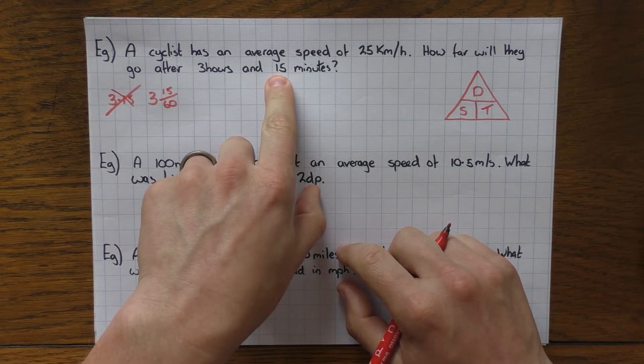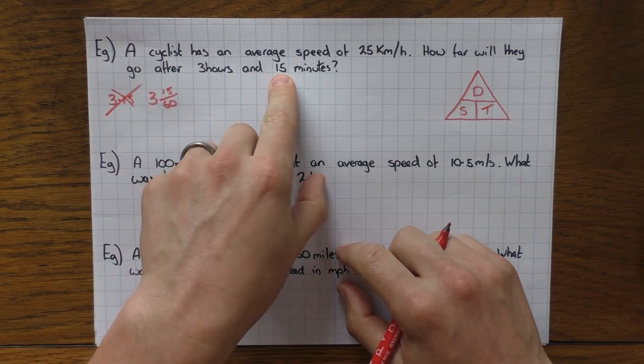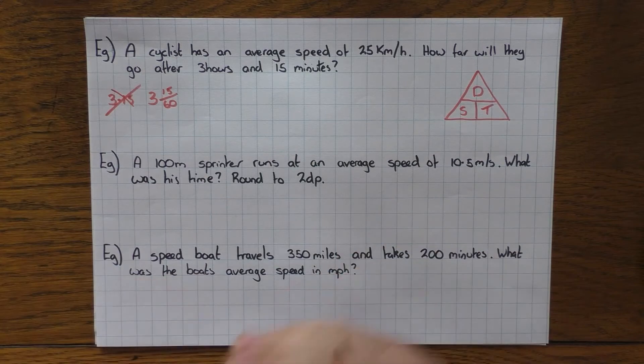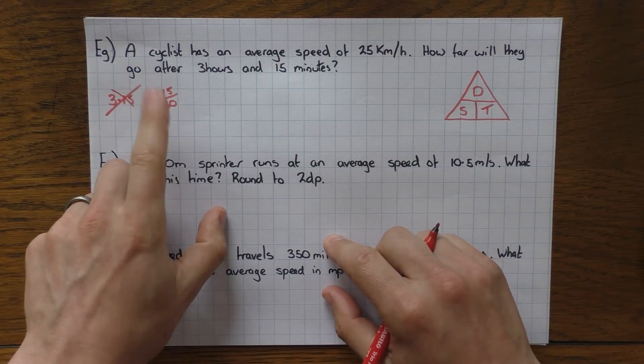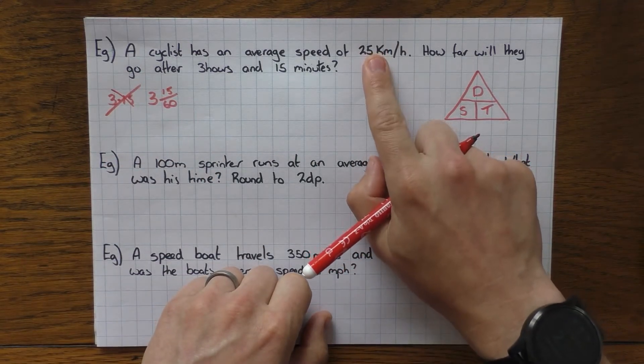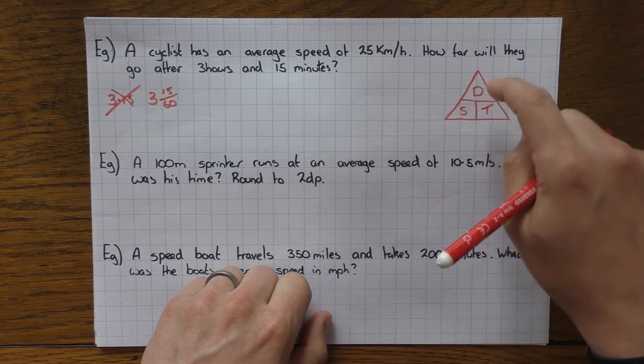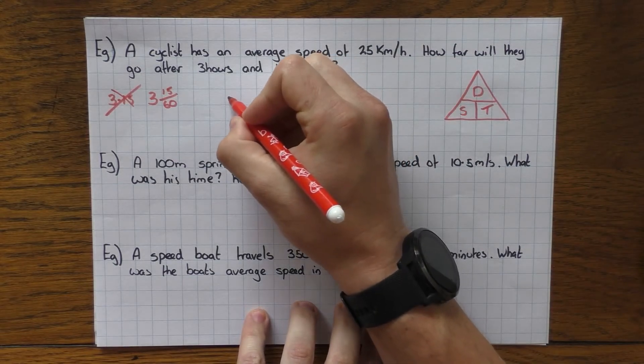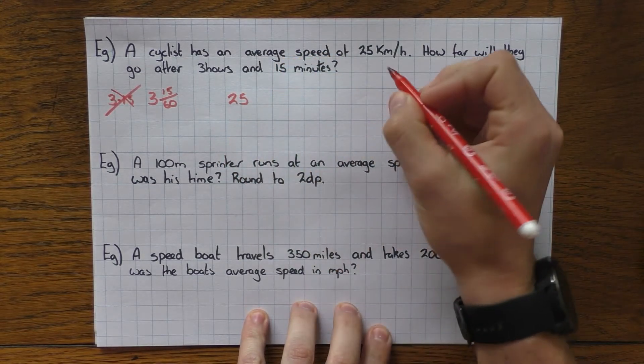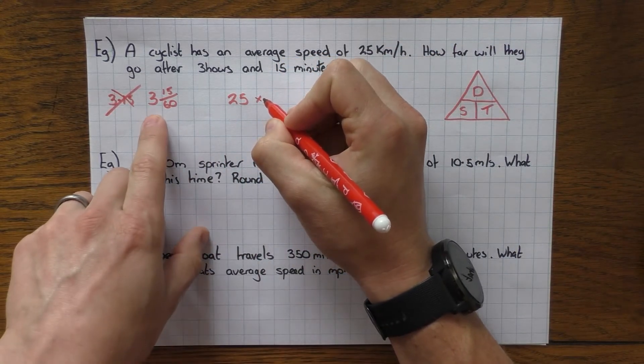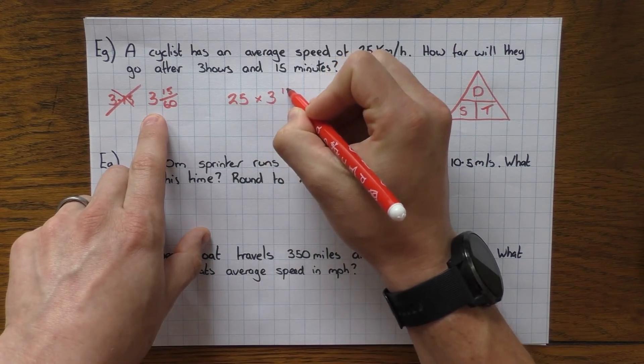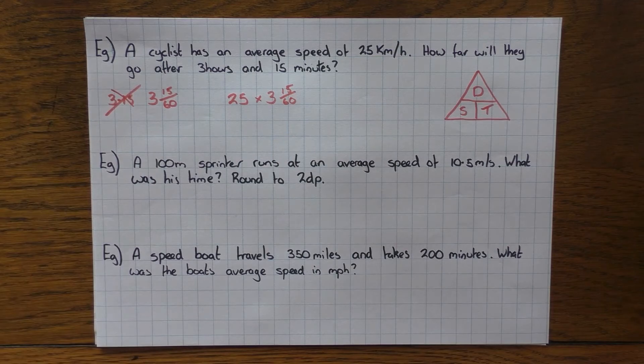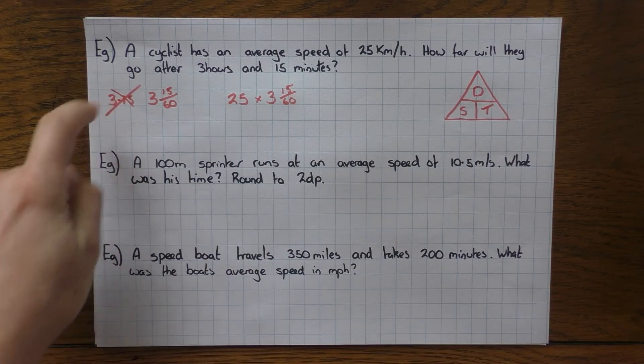So that's the time. That's the speed. We want the distance. So distance, cover it up. We need to times them. So I'm going to do 25, which is the speed, times by my fraction, which is 3 and 15 over 60, or again, 3 and a quarter or 3.25, but definitely not 3.15.